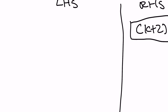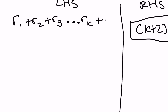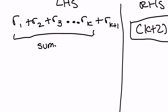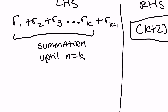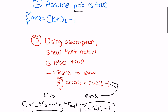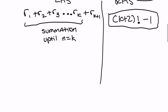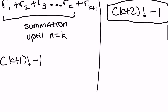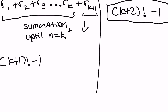My LHS is the summation up to the kth term, so that looks like r1 plus r2 plus r3 all the way up to rk, and then you also add on the rk plus one term. This whole thing is just the summation up to n equals k. Looking back at our assumption, we're assuming that n equals k is true, so we substitute k plus one factorial minus one, and then we add on the r equals k plus one term: that's k plus one times k plus one factorial.